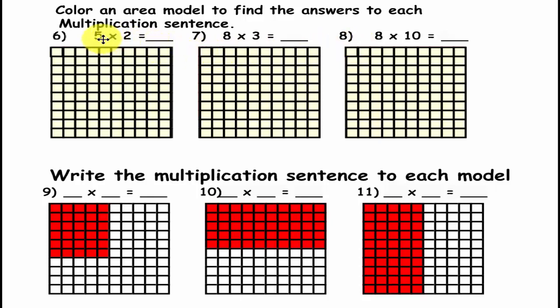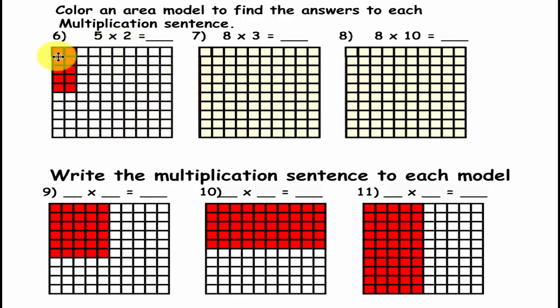Here we have 5 rows times 2. So, if you colored these in correctly, you should have 1, 2, 3, 4, 5 times 2, and the answer there is 10.